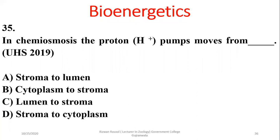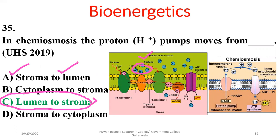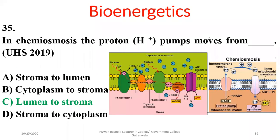Question 36 was the most discussed question from the 2019 paper. During chloroplast photosynthesis, proton pumps do not move themselves but protons are pumped toward the lumen (or toward the inter-membranous space in mitochondria). The right option according to the actual concept is alpha — stroma to lumen — but UHS marked it as lumen to stroma, which was incorrect. Hydrogen ions are always pumped toward the lumen via proton pumps, and ATP synthase carries out movement away from the lumen for ATP synthesis.